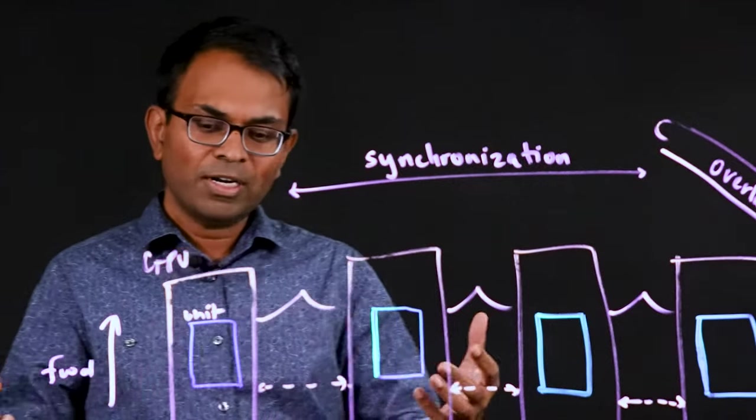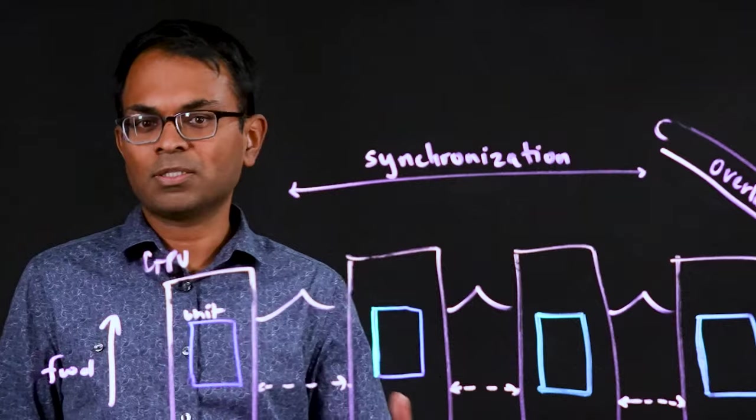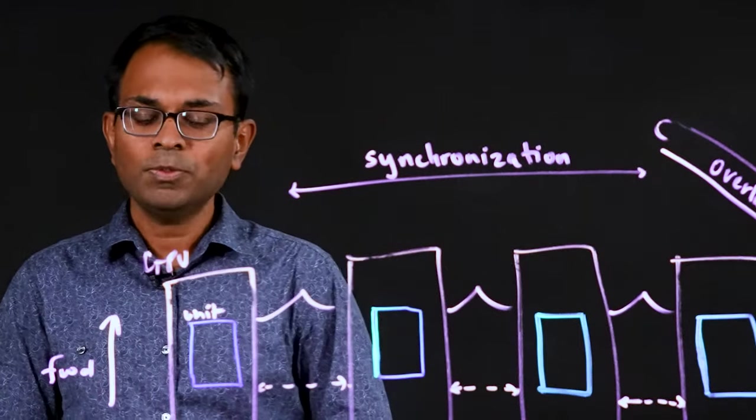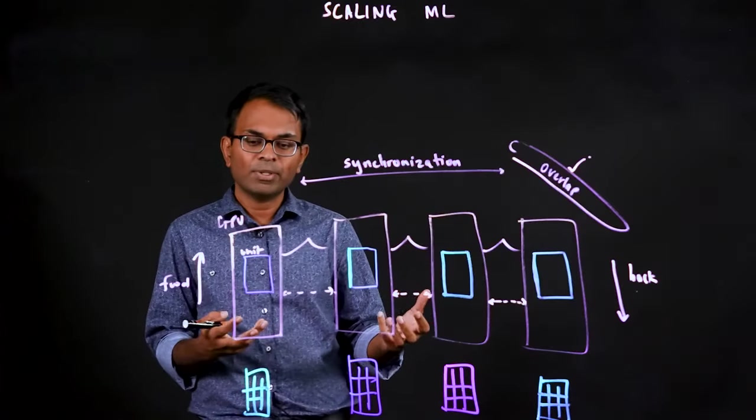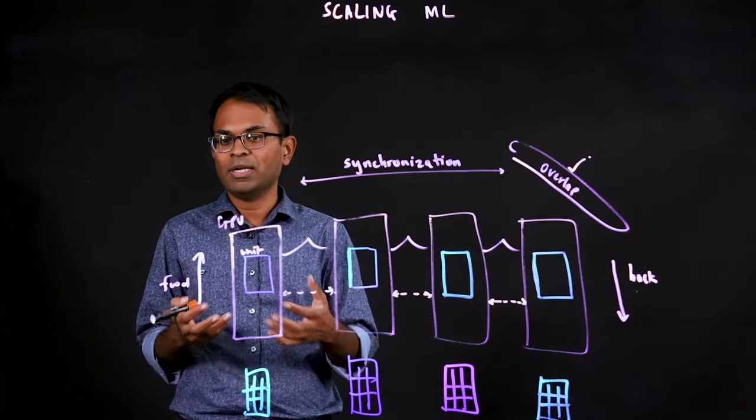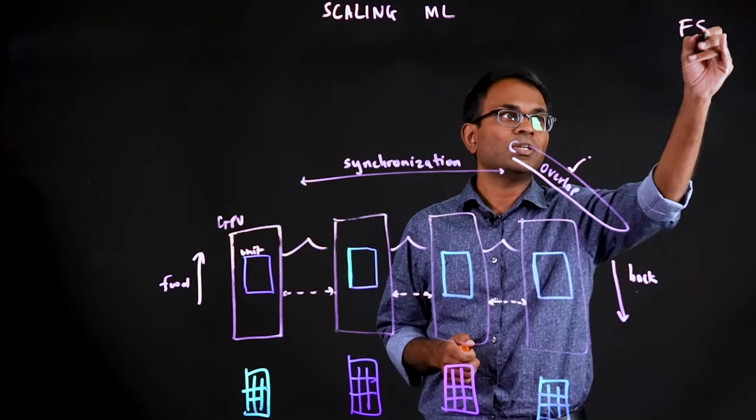All right. So you have heard all about distributed data parallel and how to scale a small model on very large number of GPUs and reduce your training times. So now let's look at what happens when we have a model that does not fit in a single GPU. And that is where FSDP comes to your rescue.